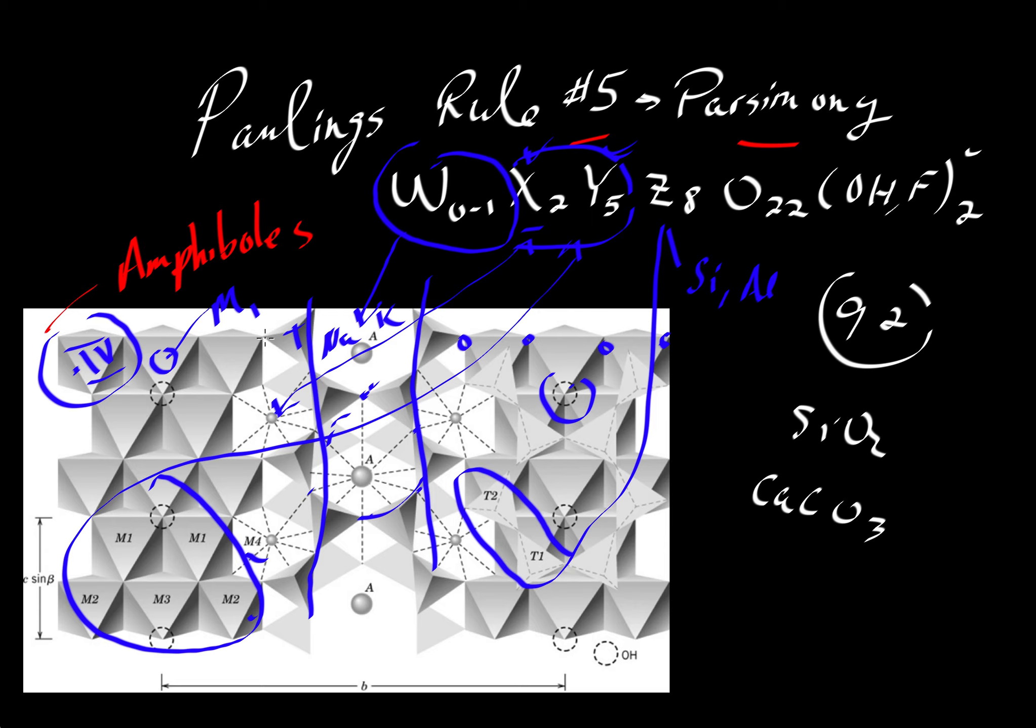We can use this word constituent in a couple of different ways. Originally, I think Linus Pauling was talking about the kinds of polyhedra that anions would be connected to. But I think it's possible to usefully broaden the idea where we talk about either chemically a W, X, Y, or Z constituent, or from a structural standpoint, an M1, A, or T2 kinds of constituent. And these constituents are very small.